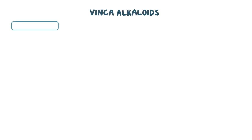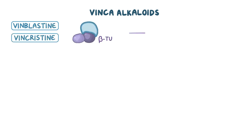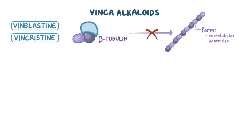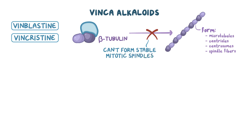Vinca alkaloids include vinblastine and vincristine. They bind to beta-tubulin and block its polymerization into protofilaments, which form microtubules, centrioles, centrosomes, and spindle fibers. This means the cell can't form stable mitotic spindles and will stop at metaphase. So vinca alkaloids act in the M phase of the cell cycle and are cell cycle specific.